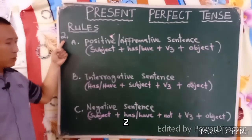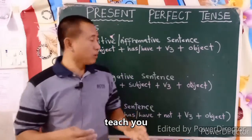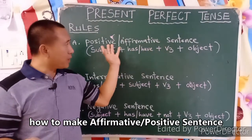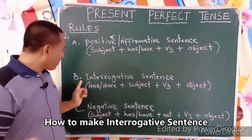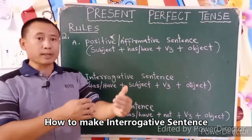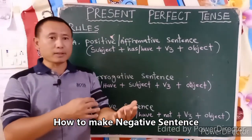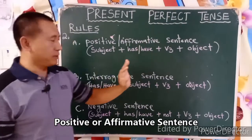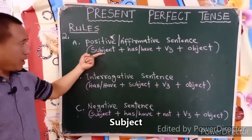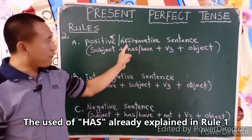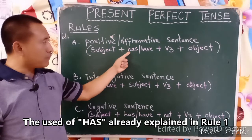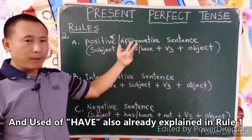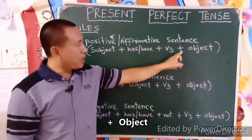Rule 2: I am going to teach you how to make an affirmative sentence, an interrogative sentence, and a negative sentence. For a positive or affirmative sentence, the structure is: Subject first, then has or have — as established in Rule 1 — then V3 plus object.